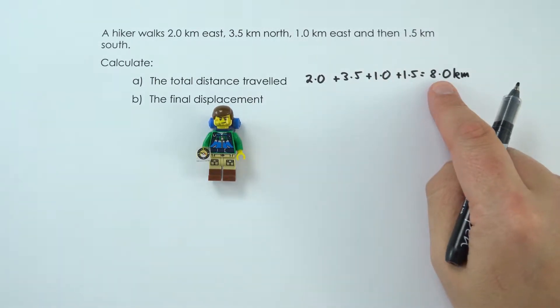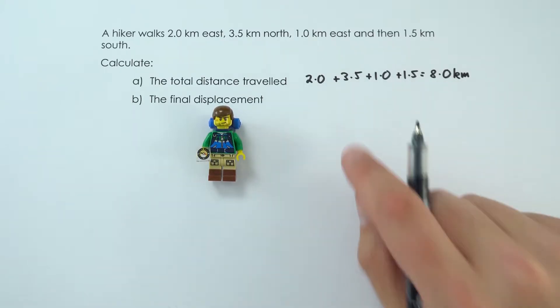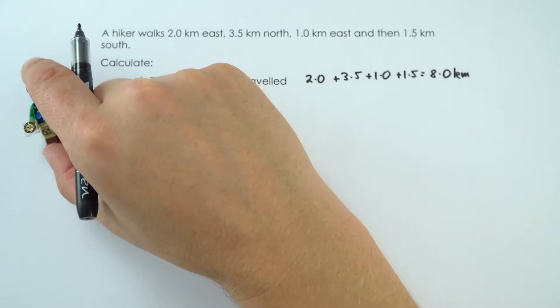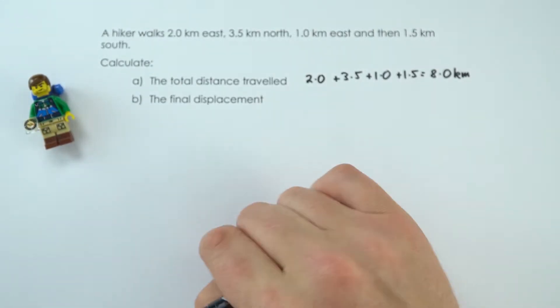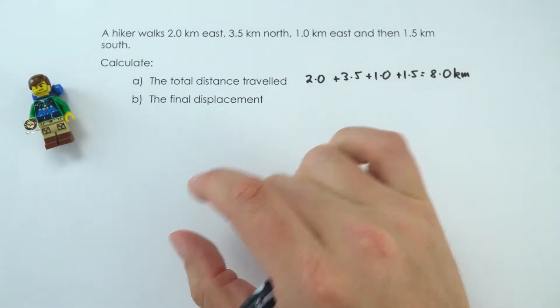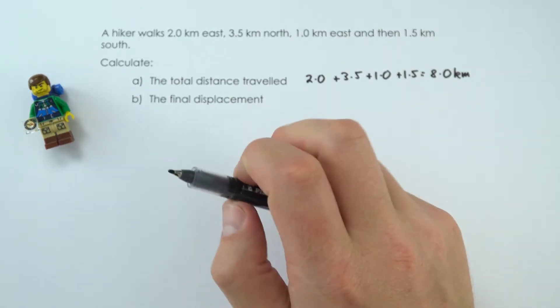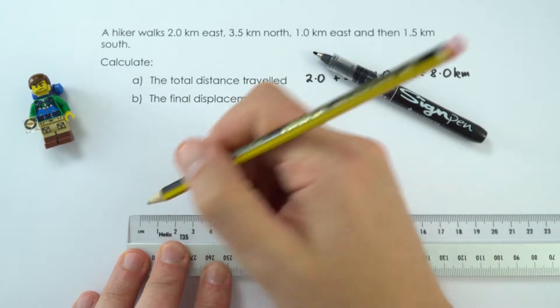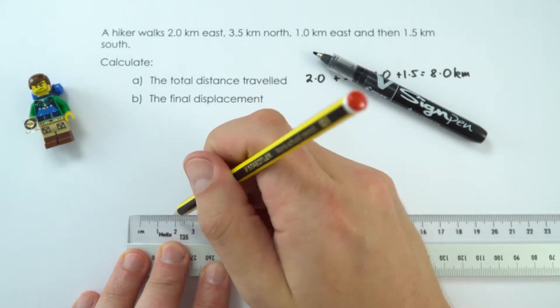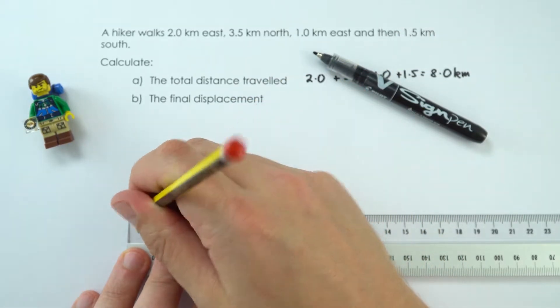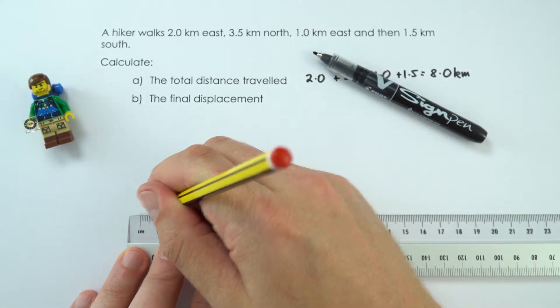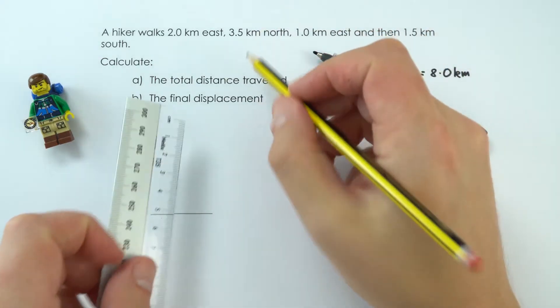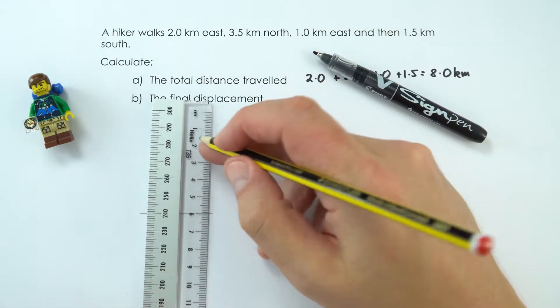They've gone eight kilometers, about five miles, but now we need to work out the final displacement. To work this out, I'm going to do a sketch to show the start to end position. I'll use a pencil and ruler, and even though it's not a scale drawing, I'll say two centimeters equals a kilometer. If they went two kilometers east, that's four centimeters. They then went north three and a half kilometers, so that's seven centimeters.